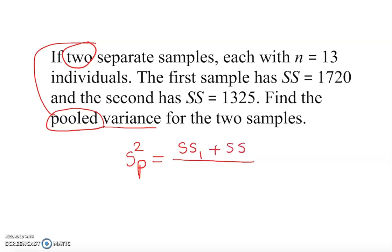In other words, sum squared 1 plus sum squared 2. This information is given as you see right up here. This is SS1, this is SS2. Okay, over degree of freedom.